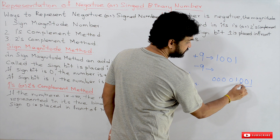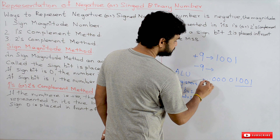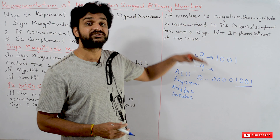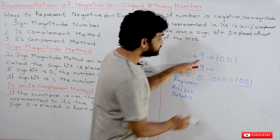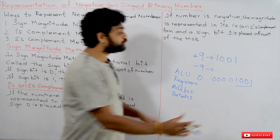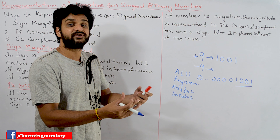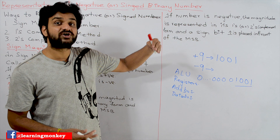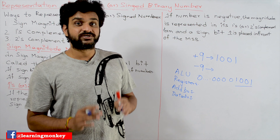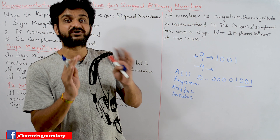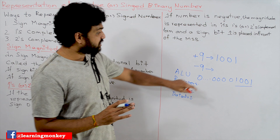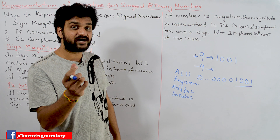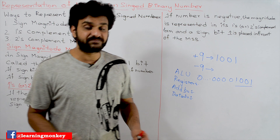That means 1001 is preceded with 60 more zeros, so a total of 64 bits is used to represent 9. In order to process 9 in the arithmetic logic unit, it will also be processed with respect to these 64 bits. This is just a small view to have an understanding of how data will get stored and processed on the computer.